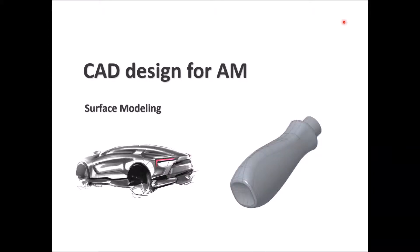Surface modeling can start with a sketch on paper, then be turned into a 3D software model and given a certain thickness for 3D printing. Here we can see surface modeling for a container for liquid — the curvature is made out of a group of surfaces connected together in a certain way to give the final closed object.